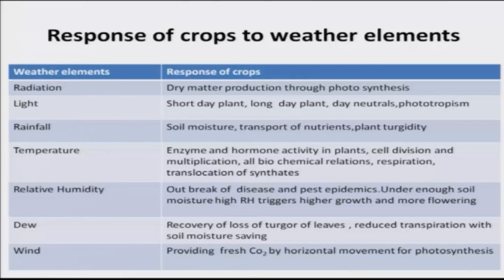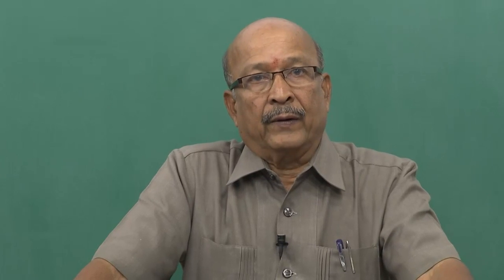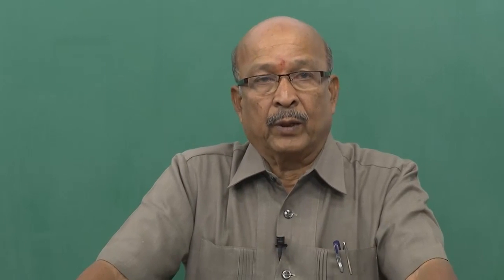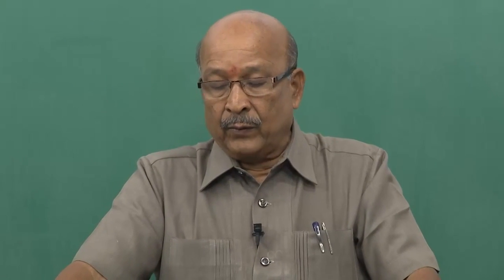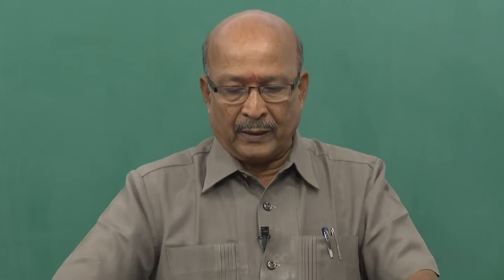The response of crops to weather elements must be understood. Radiation comes directly from the sun as short-wave radiation, in the range of 0.4 to 0.7 micron — also called visible light. With receipt of this visible light, dry matter production is increased through higher photosynthesis. Regarding light, there are short-day plants, long-day plants, day-neutrals, and photoperiodism. It is an adaptation capacity based on light, and different plants have different capacity — this is a good interaction.